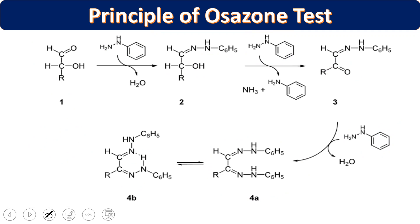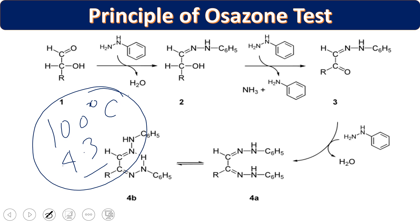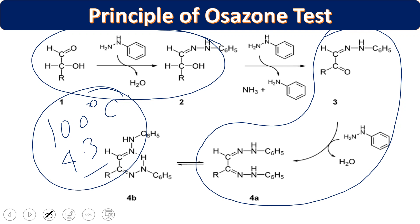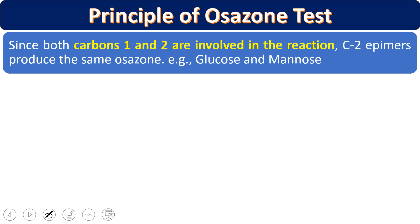The role of the second phenylhydrazine molecule is the oxidation of the hydroxyl group into a ketonic group. The osazone crystals are stabilized by hydrogen bond formation. The reaction takes place at 100°C — meaning in a boiling water bath — and at pH 4.3, which is acidic pH. Under these conditions the reducing carbohydrate reacts with phenylhydrazine and the crystals form.